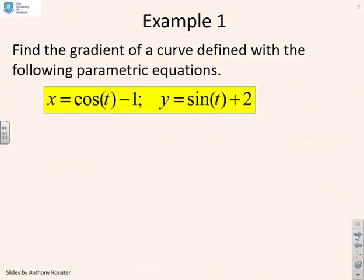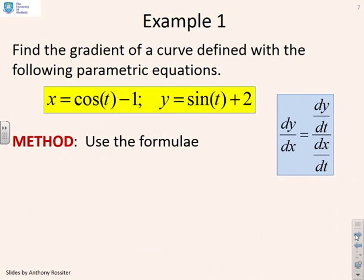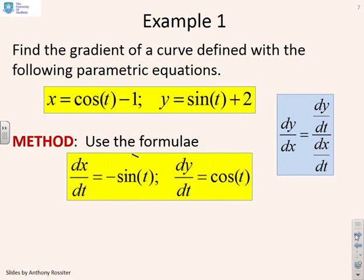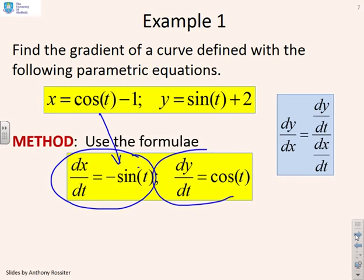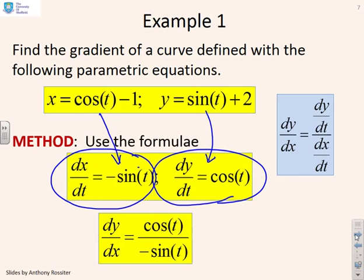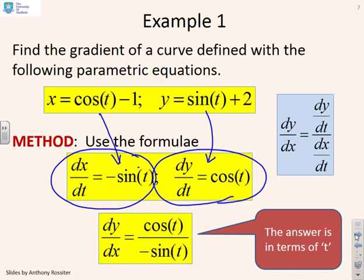Now we apply this to the circle. Given x equals cos(t) minus 1 and y equals sin(t) plus 2, we use the formula dy/dx = (dy/dt) / (dx/dt). Differentiating: dx/dt equals minus sin(t), and dy/dt equals cos(t). Plugging into the formula gives dy/dx equals cos(t) divided by minus sin(t). Notice the answer is expressed in terms of t, not in terms of x or y.